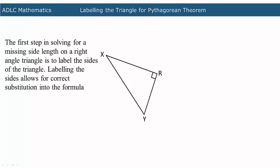The first step in solving for a missing side length on a right-angled triangle is to label the sides of the triangle. Labeling the sides allows for correct substitution into the formula.